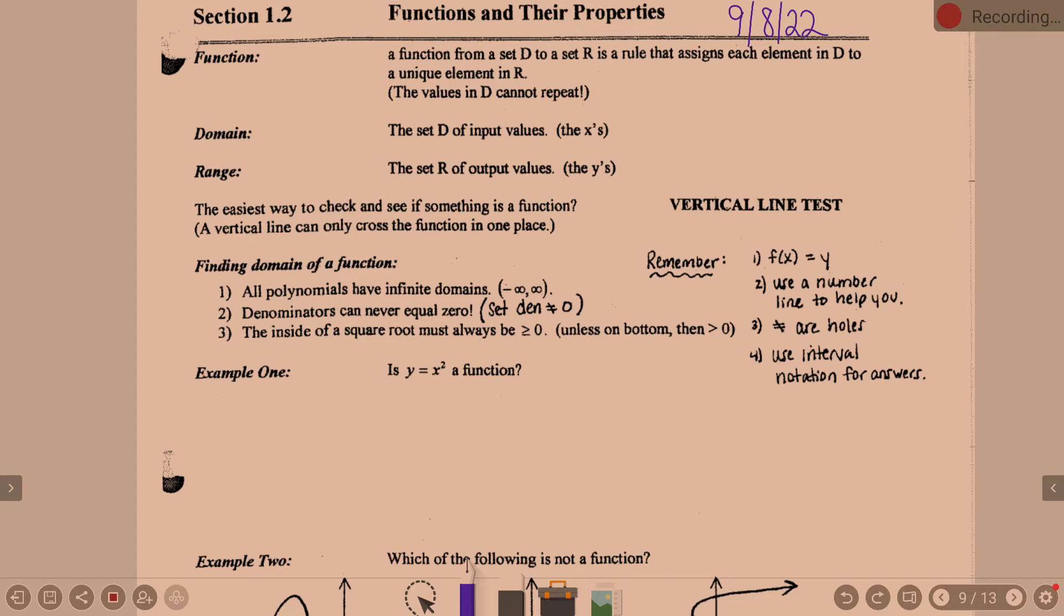You've got an input and an output, right? So it's the relationship between input and output. When we're looking at functions, notice right here it mentions the values in D cannot repeat. What's D standing for? Domain. Domain, right? So the values in the domain do not repeat.